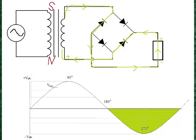So again it flows through here, around through this diode, to the negative of the device, flows through the device powering it, leaves here — which is basically a positive as far as the...